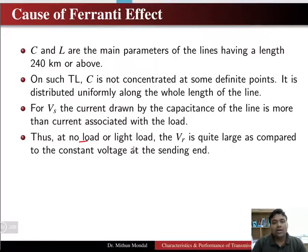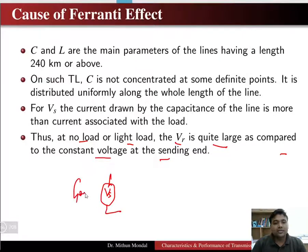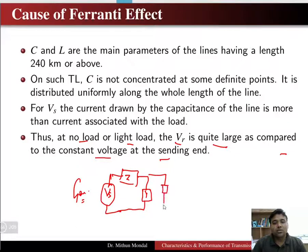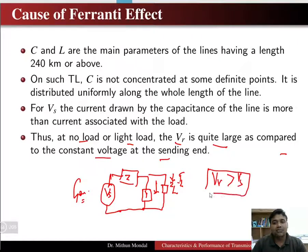At no-load or light load conditions, the receiving end voltage is quite large compared to the constant sending end voltage. The sending end voltage, which is constant, is due to the generator. We have the series impedance and the shunt admittance of the line for the long transmission line, with the load at the receiving end. The charging current flows through the shunt admittance, which is more than the current flowing through the load, so the receiving end voltage will be more than the sending end voltage.